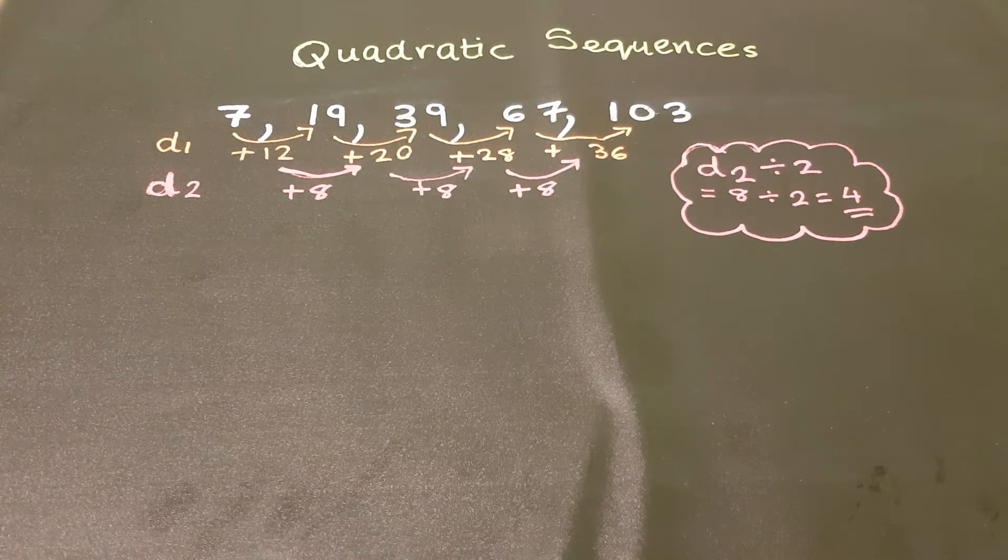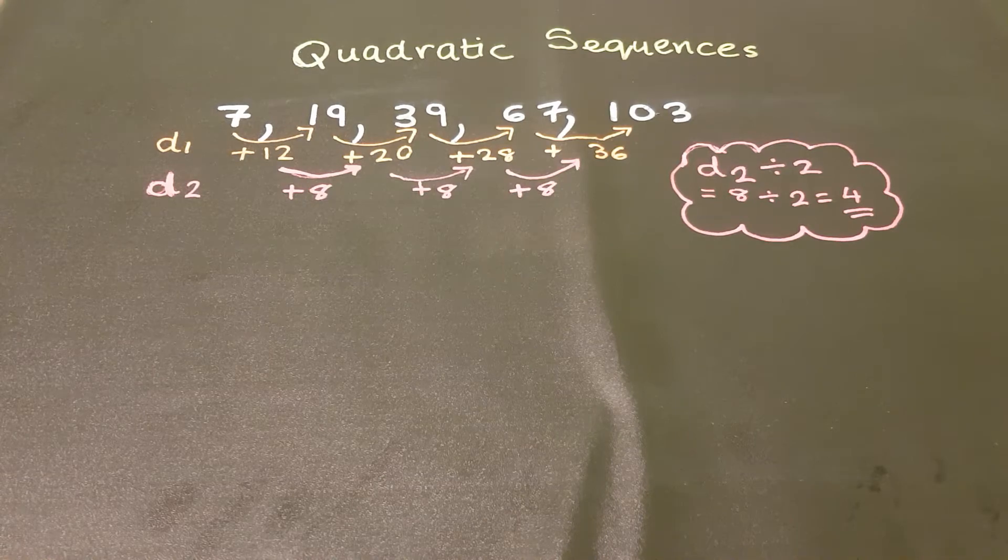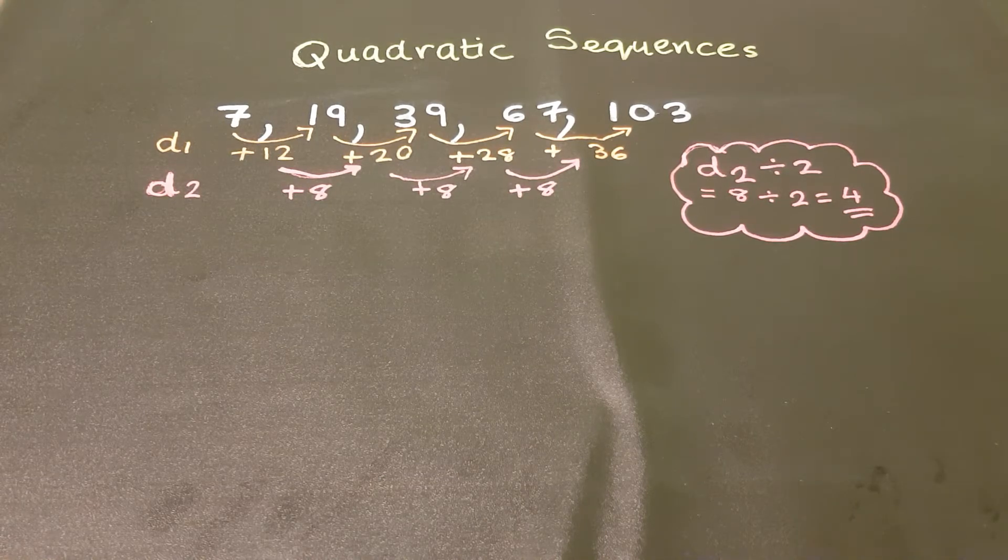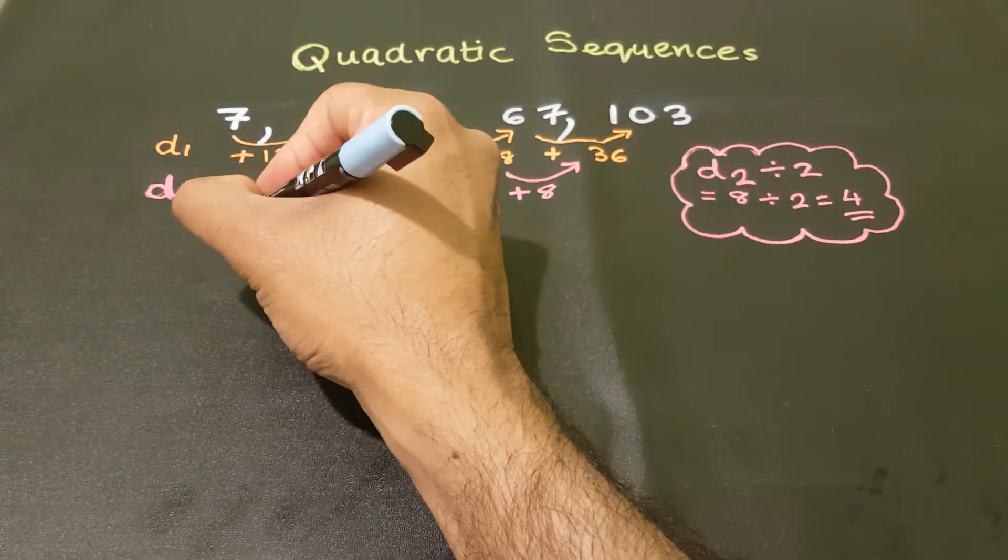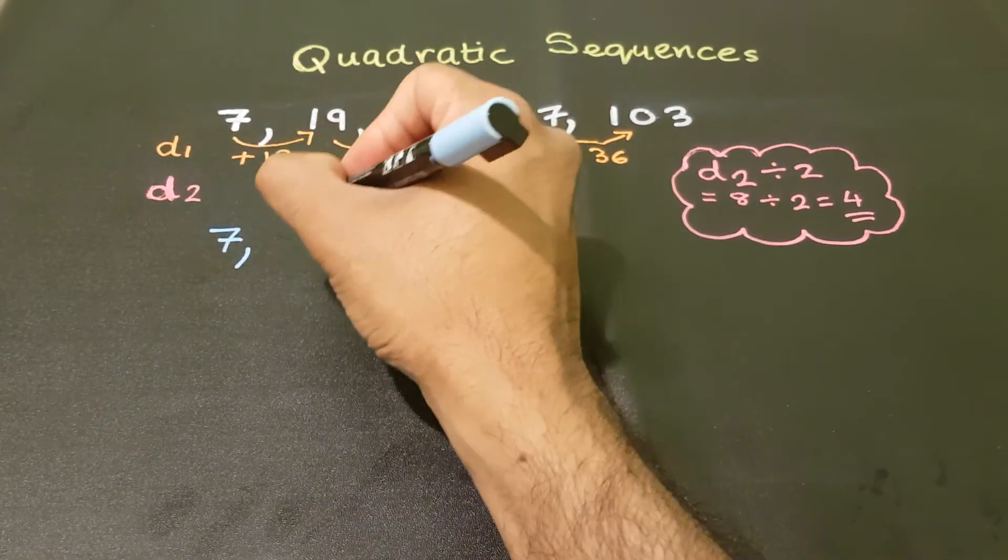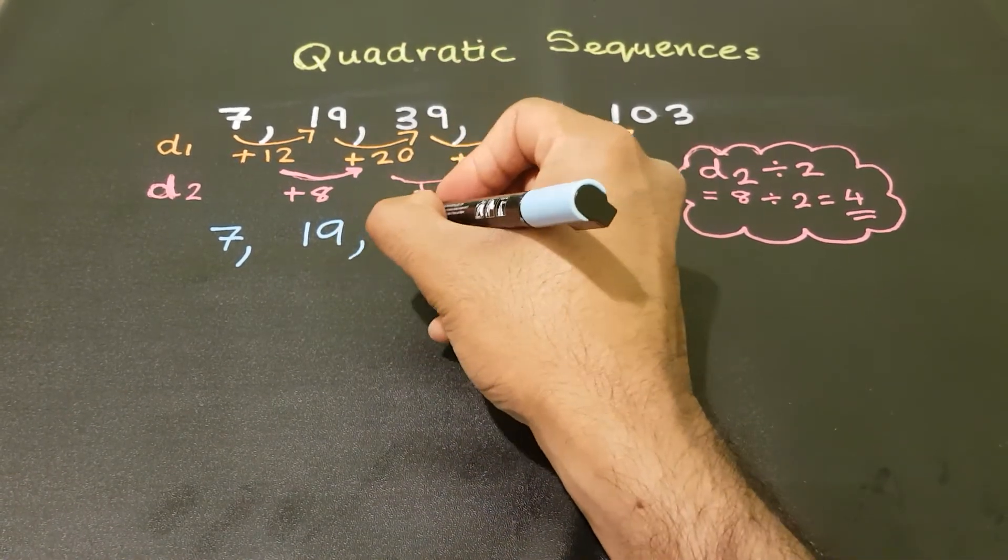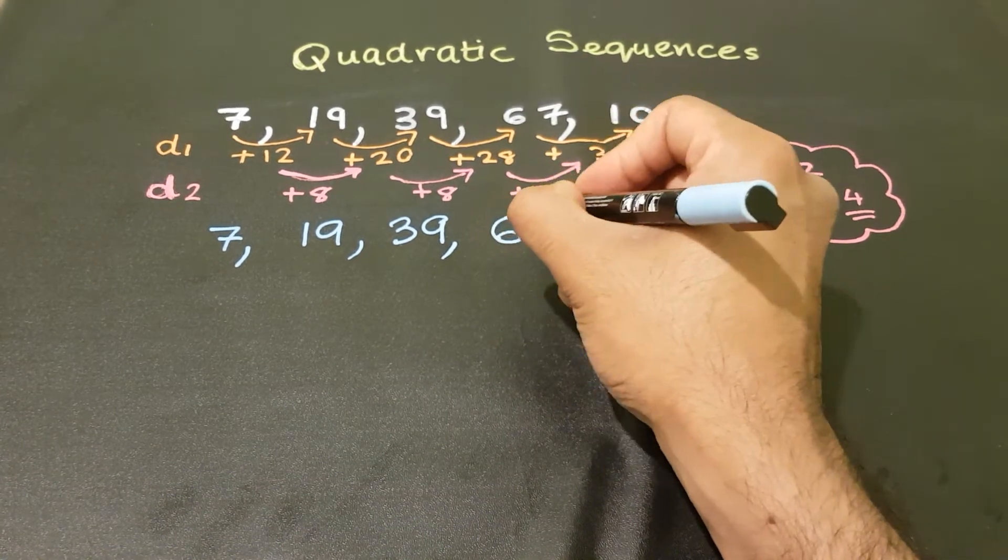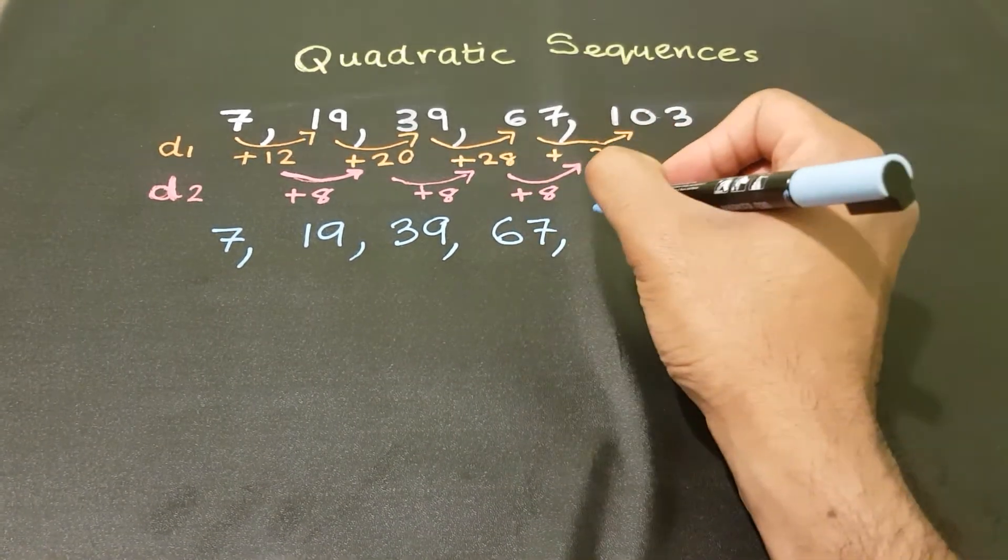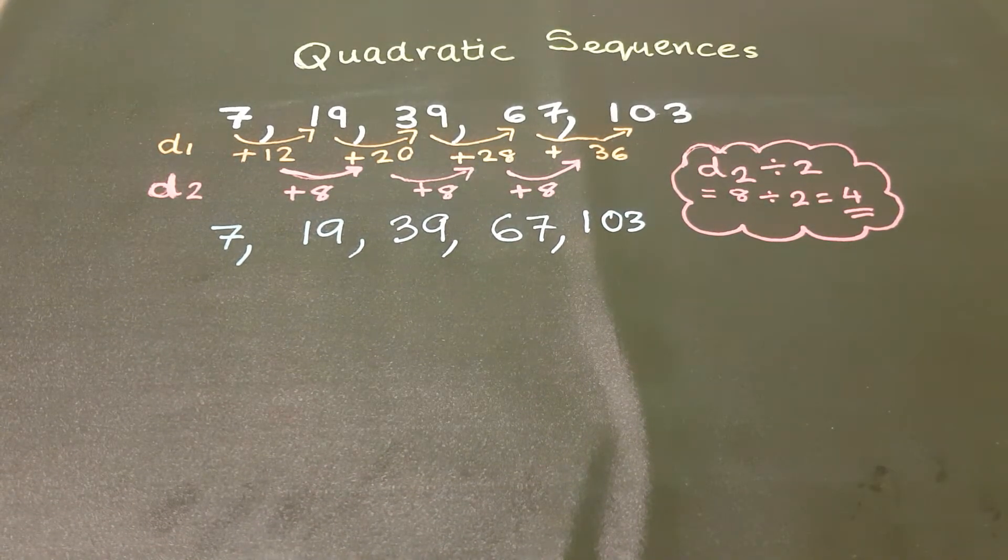Okay, once we have now ensured that we have a quadratic sequence, we've confirmed it. What I'm going to do next is write out my quadratic sequence again. So 7, 19, 39, 67, and 103. Okay, those are the numbers.